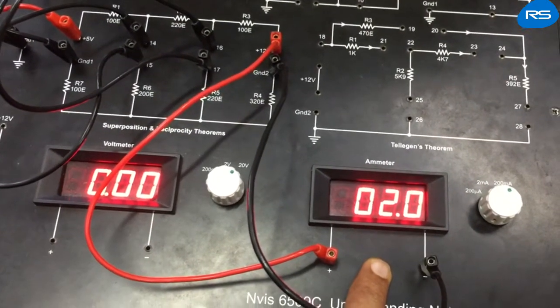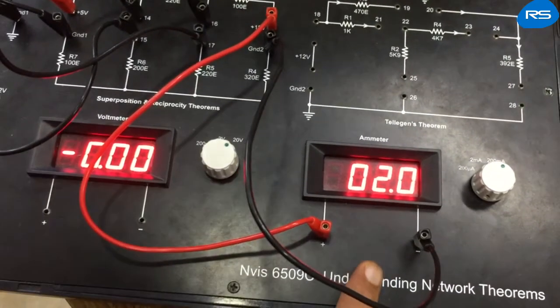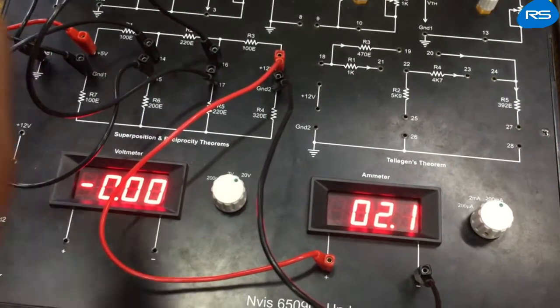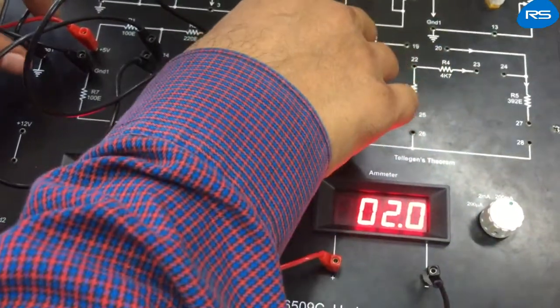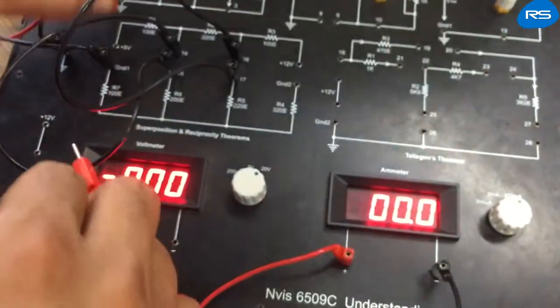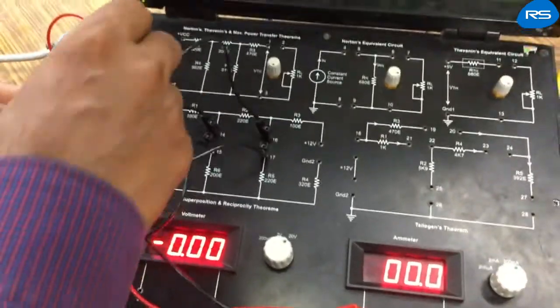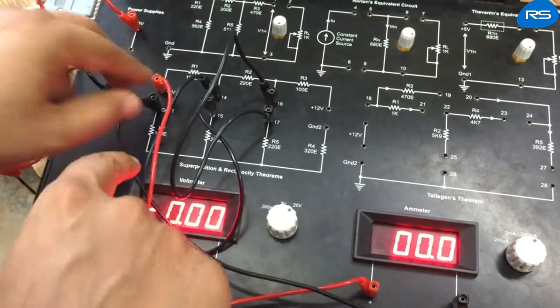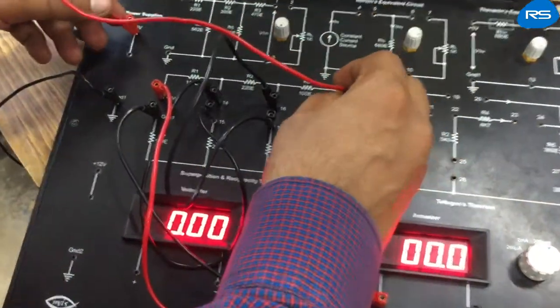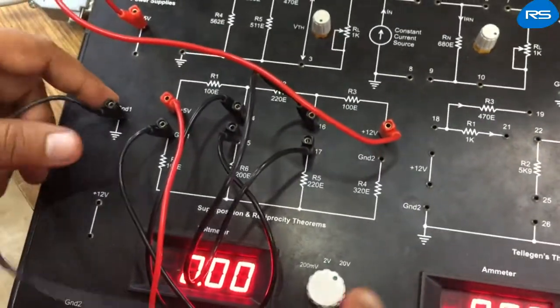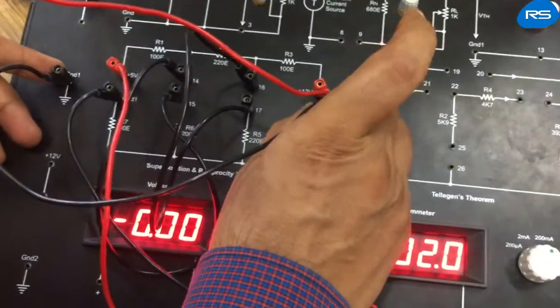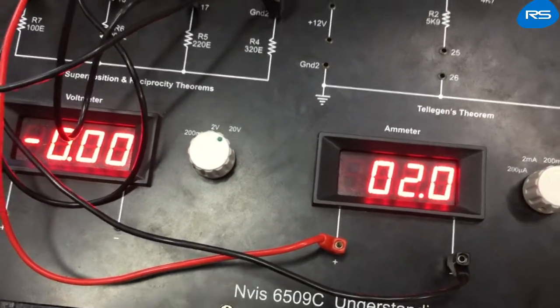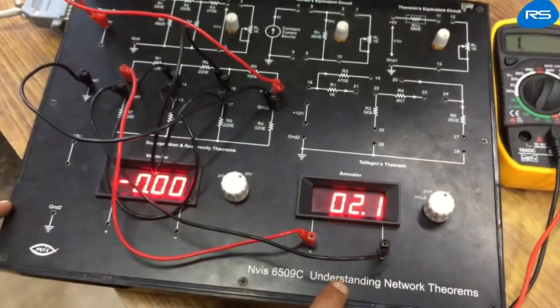Now we will interchange the connections of the power supply and ammeter. So we will remove the connections and here we will connect the ammeter at the plus 5 volt terminal and ground one terminal. We will connect the plus 5 volt power supply with the plus 12 volt terminal and ground terminal of power supply with ground two terminal of the given circuit. And in this case again we are getting 2.1 or 2 milliampere of current.